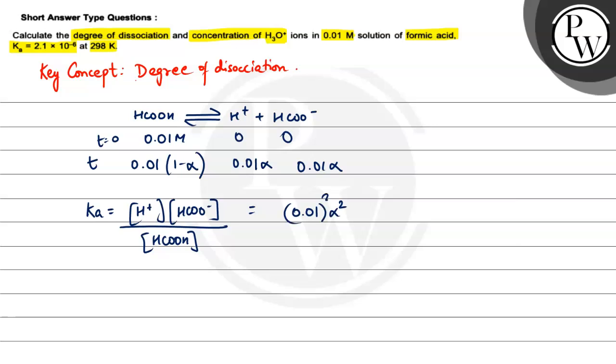This is going to be equal to 0.01 alpha squared. And HCOOH, so we can easily take alpha to be much much less than 1, which implies that 1 minus alpha will be approximately equal to 1.